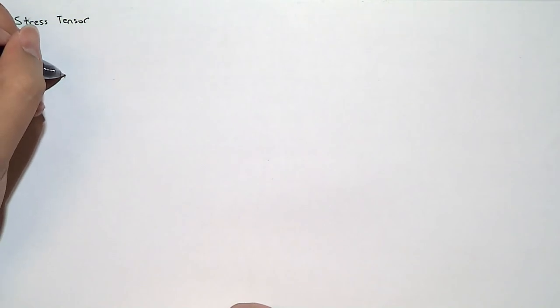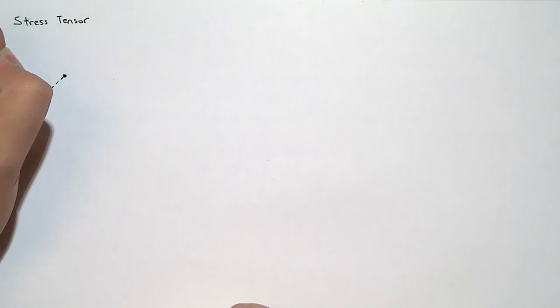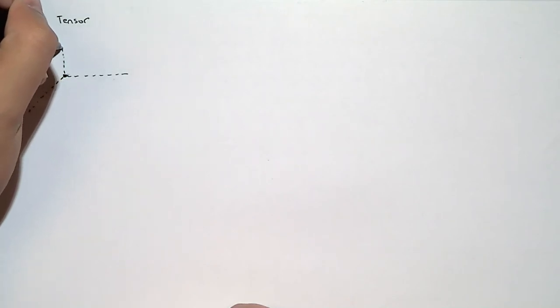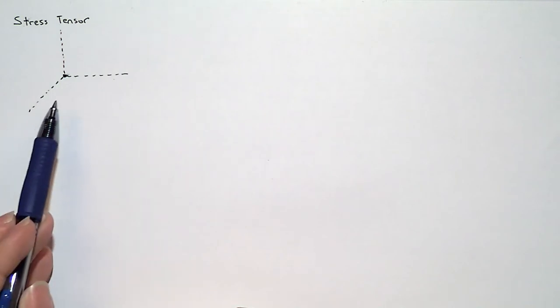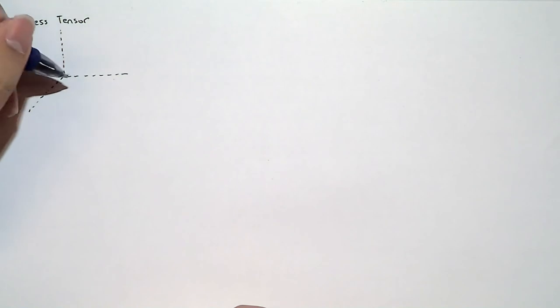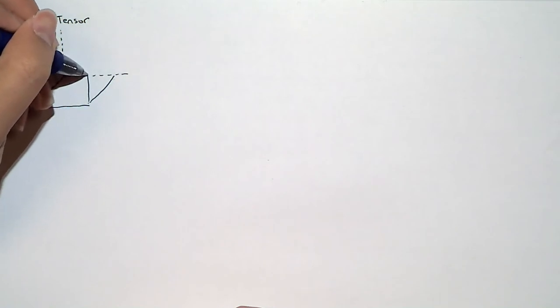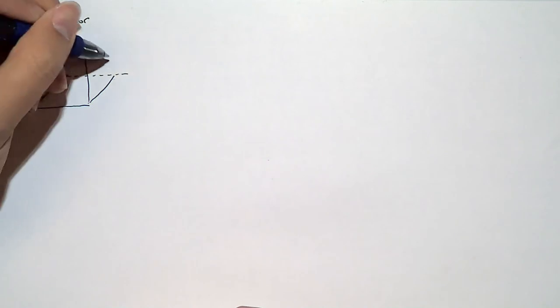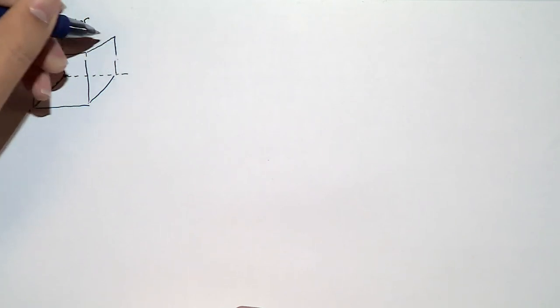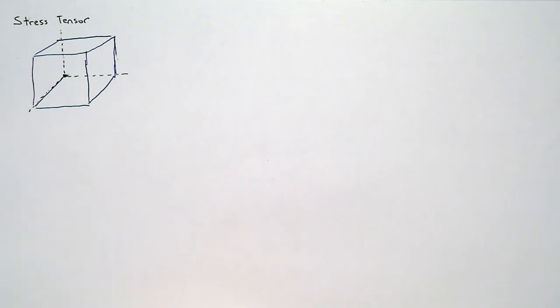We're going to start today's discussion on momentum by first defining the stress tensor. I'm going to draw a fluid particle located at the origin. In a Cartesian coordinate system with x, y, and z coordinates, I want to draw a fluid particle that has one of its corners at the origin — picture it as an actual cube.